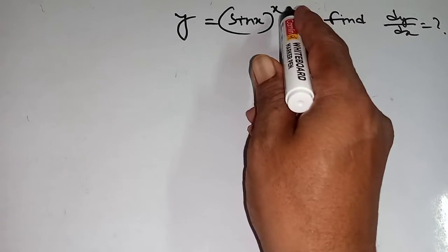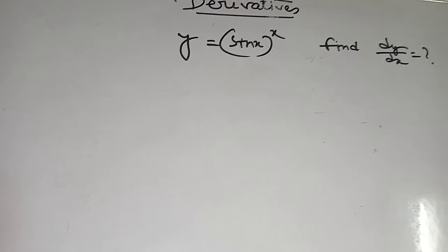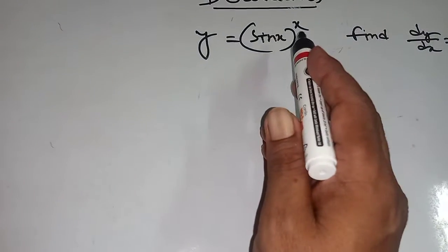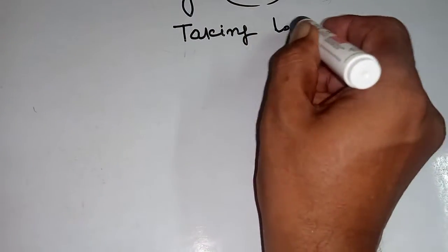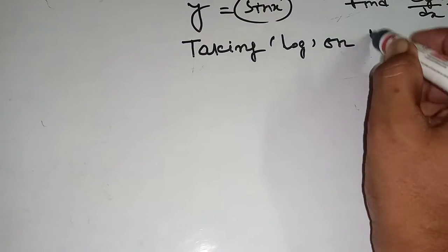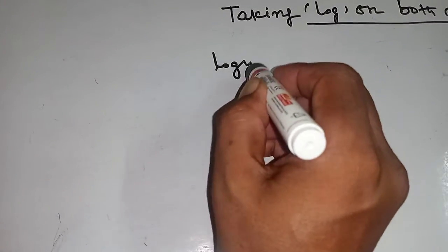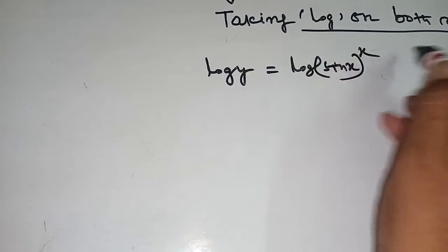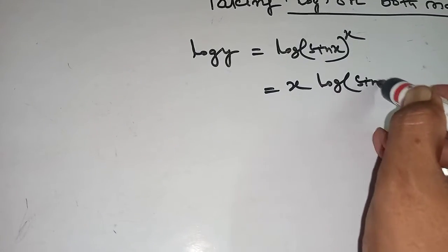Here base is x and power is x. Taking log on both sides: log y equal to log sin x whole to the power x. Here will come first x into log sin x.